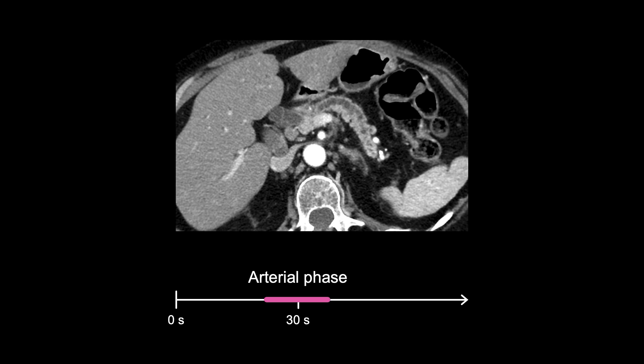Often, the first CT finding to raise concern of a pancreas mass is dilation of the pancreas duct. Normally, the duct is barely visible, so if you can see it, you are right to suspect a mass causing an obstruction.